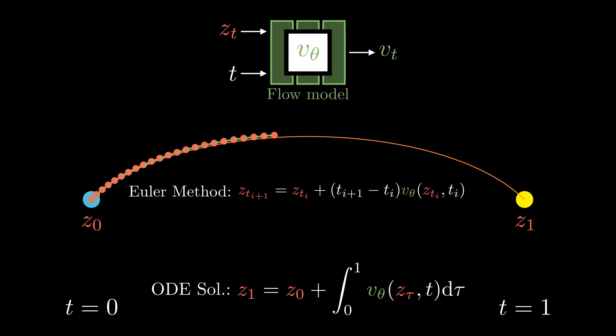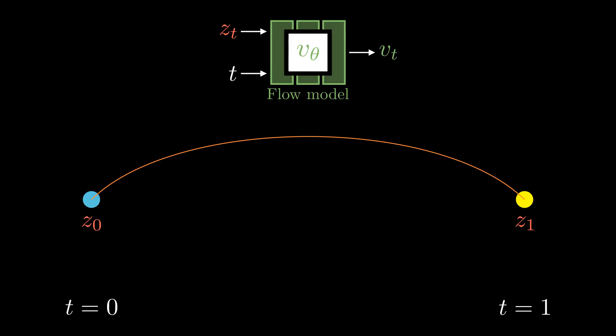For example, Euler method is an intuitive method to approximate the solution to an ODE. But we need to maintain a small step size to get a good approximation. The results are poor when we use a larger step size. Other higher-order ODE solvers are available like RK2 and RK4. But they all have similar trade-off between accuracy and computation. This is why we need multiple iterations to generate good samples.